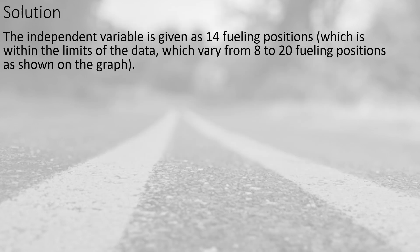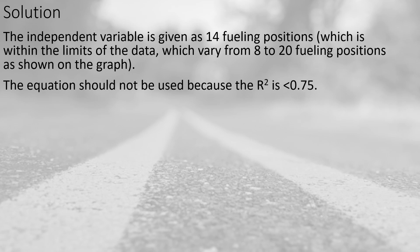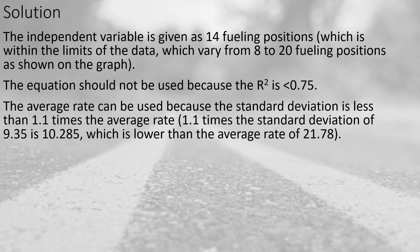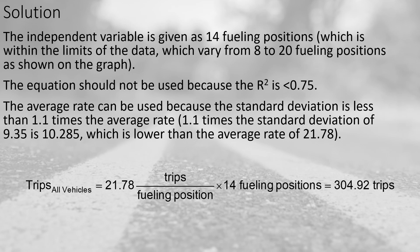The independent variable of 14 fueling positions is within the 8 to 20 fueling position limit seen on the graph. We can't use the equation because the R-squared is much less than 0.75. We can use the average rate because the standard deviation is less than 1.1 times the average rate: 1.1 times 9.35 equals 10.285, which is lower than the 21.78 average rate. So the number of trips for all vehicles is 21.78 trips per fueling position multiplied by 14 fueling positions, giving us 304.92 trips — rounded up to 305 trips.